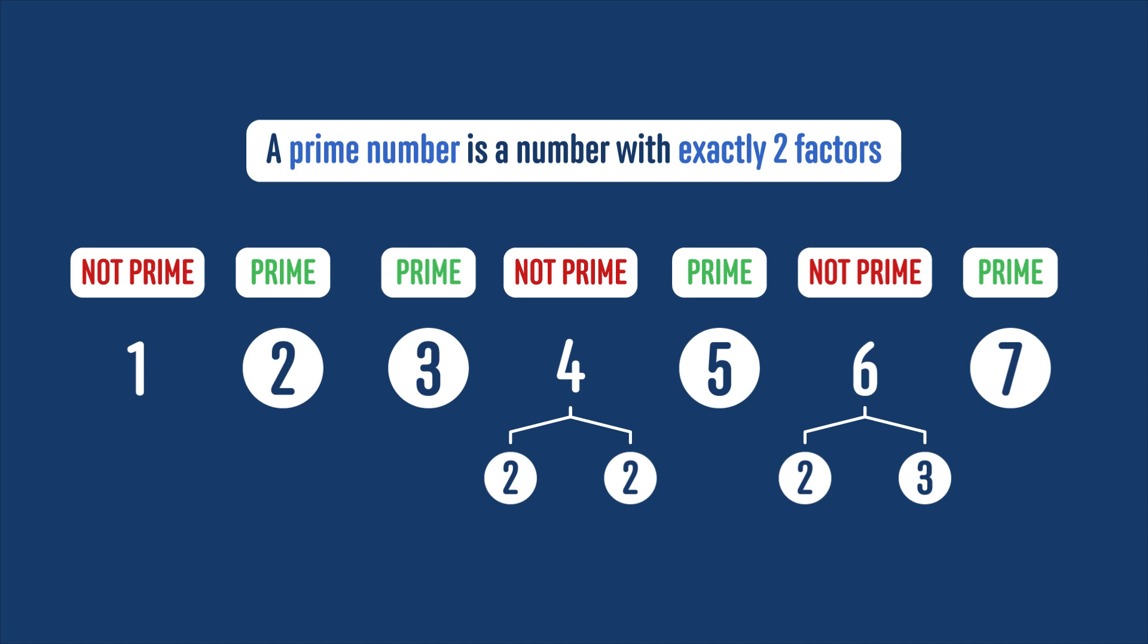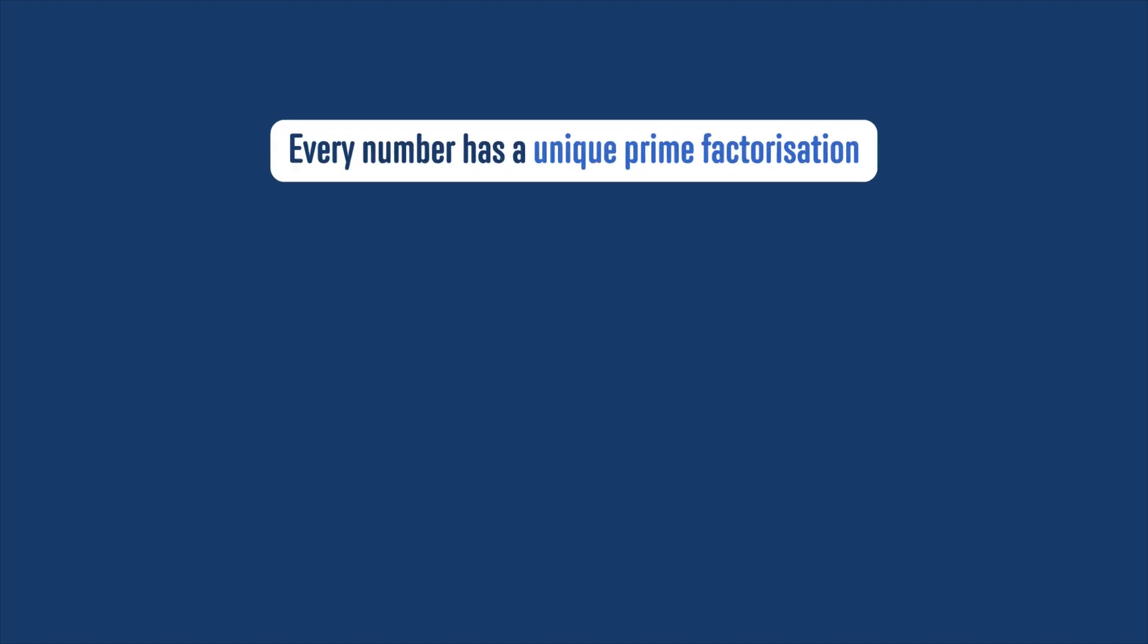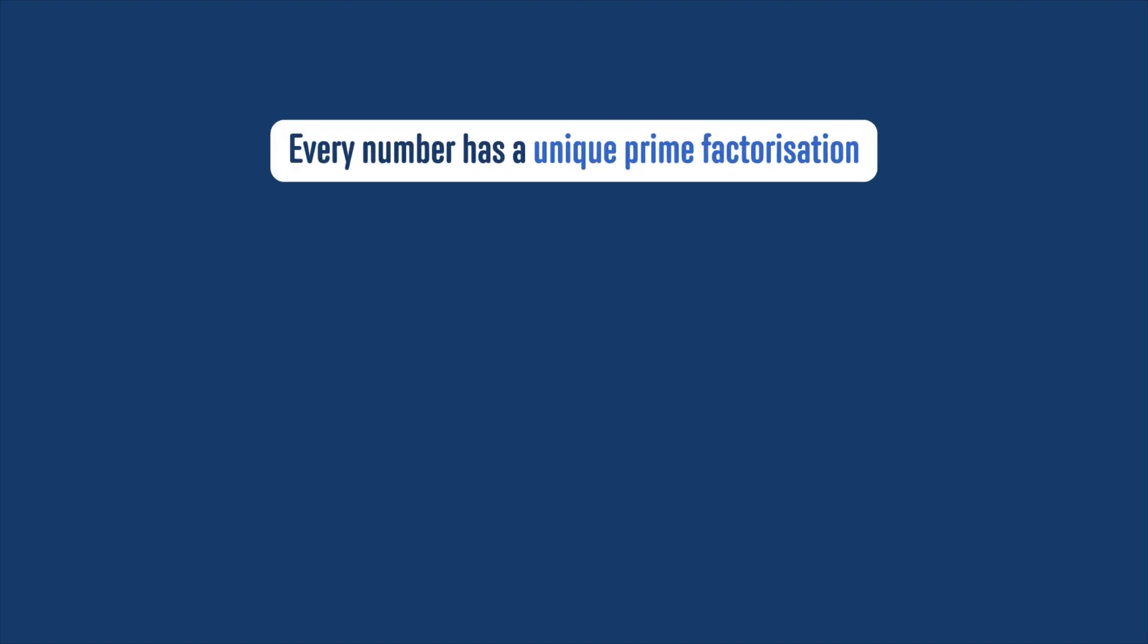But the real reason 1 isn't included as a prime number is because we think of prime factorisations as the DNA of numbers. In the sense that every number has a unique prime factorisation—that's just one way that it can be split up into factors.